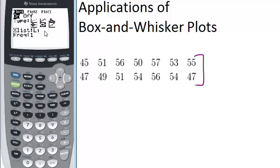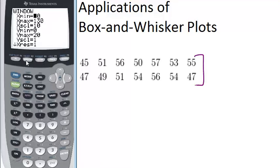Now the next thing we want to do is make sure our window is set correctly. For a box and whisker plot, the thing that really matters is your X values because Y is sort of irrelevant. So you want to make sure that the X values are in the correct range.